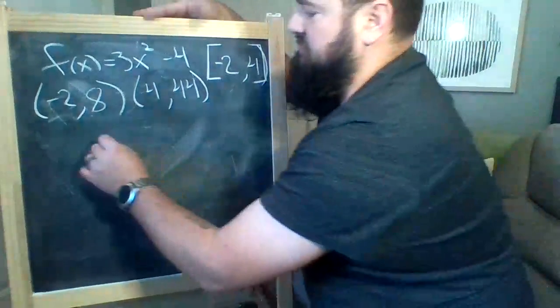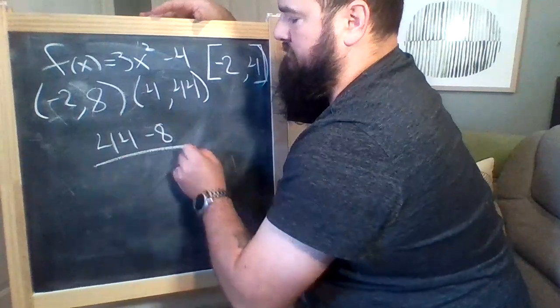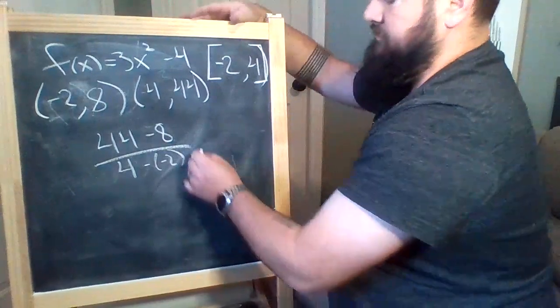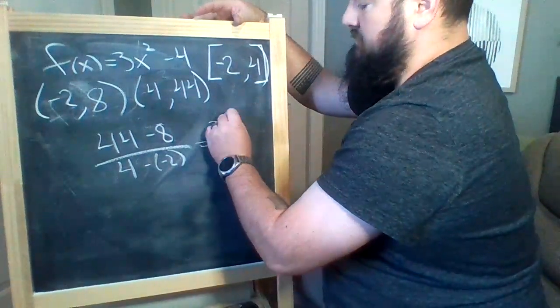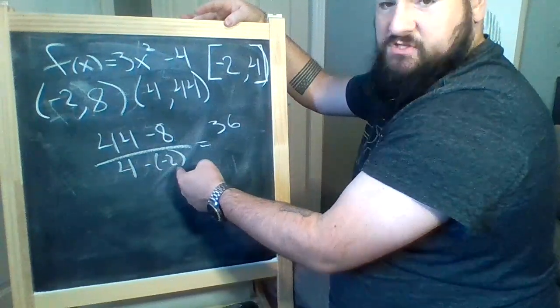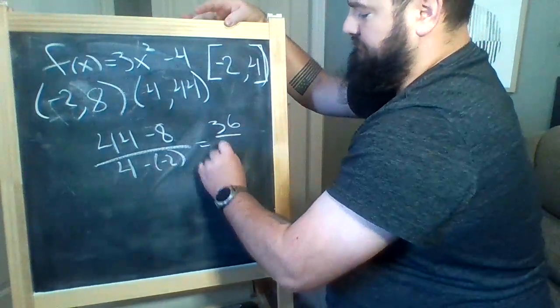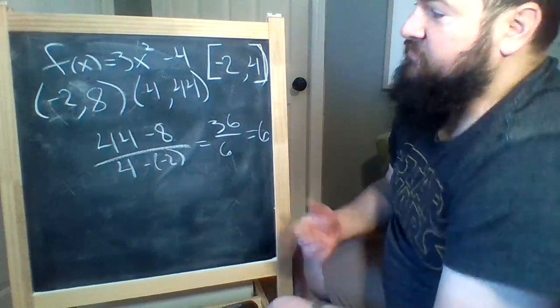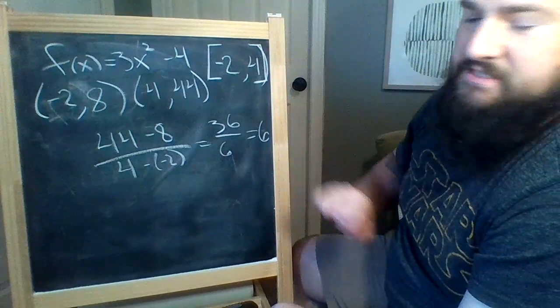So we take 44 minus 8, divided by 4 minus -2. So 44 minus 8 is 36. And 4 minus -2, when we subtract a negative that becomes plus. So 4 plus 2 is 6, and we get 6. So the average rate of change of 3x² minus 4, from -2 to 4, is 6.